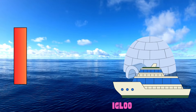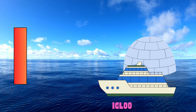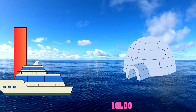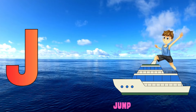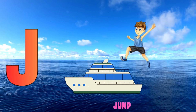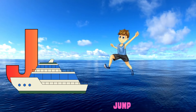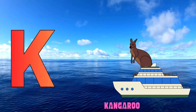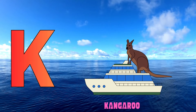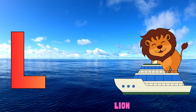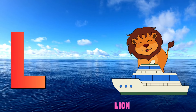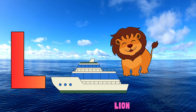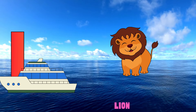I is for igloo, i-i-igloo. J is for jump, j-j-jump. K is for kangaroo, k-k-kangaroo. L is for lion, l-l-lion.